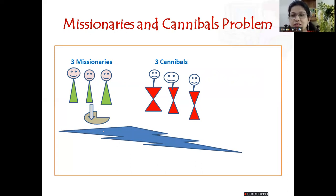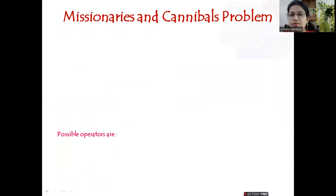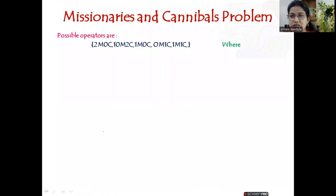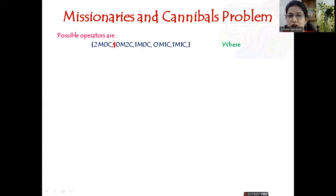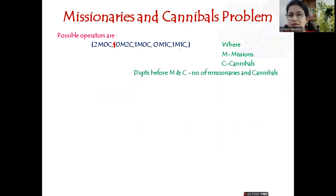Let us see how to formulate the state space search for this problem. The possible operators (heuristics) are: two missionaries and zero cannibals on the boat; zero missionaries and two cannibals; one missionary and zero cannibals; zero missionaries and one cannibal; or one missionary and one cannibal. At most two people can go, but even one person going is fine. M stands for missionaries, C for cannibals, and the digits indicate their counts.